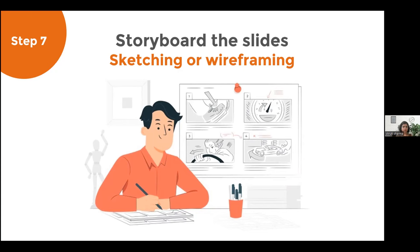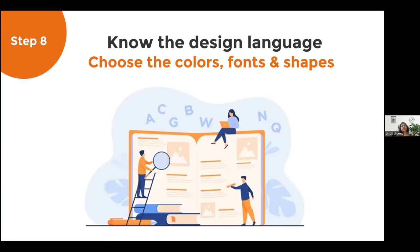You can do the storyboarding on paper or a notepad — whatever works for you. Step eight is knowing your design language. There are two kinds of presentations: internal ones for your own organization, where you already know the colors, fonts, and shapes used; and external ones for clients, investors, or partners, where you need to research their design language through their website, social media, print ads, and outdoor ads.